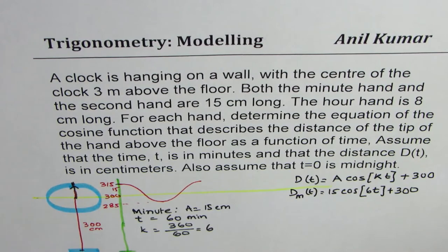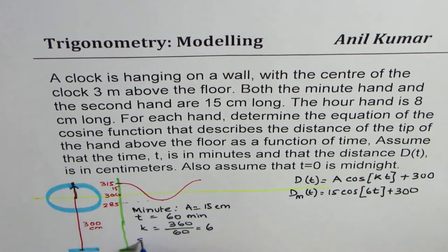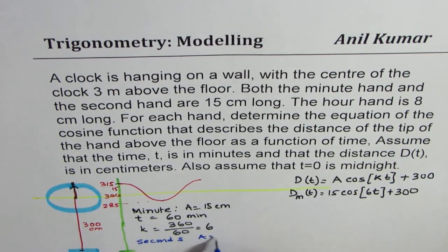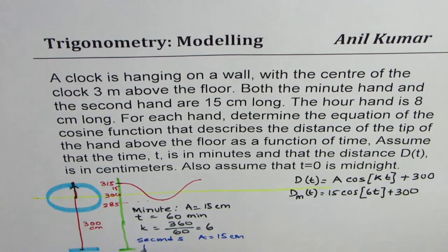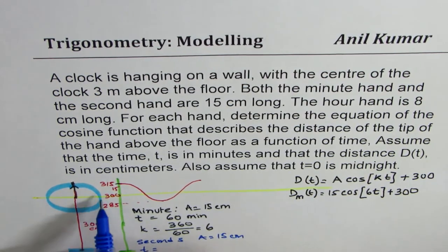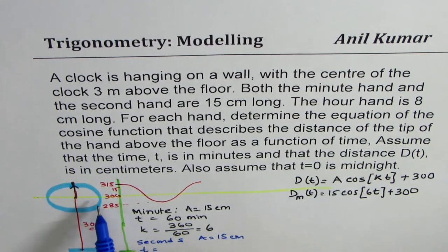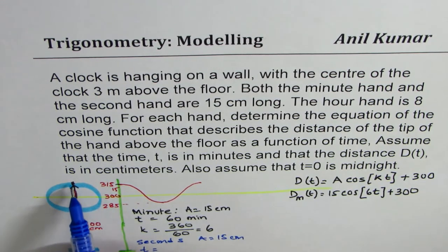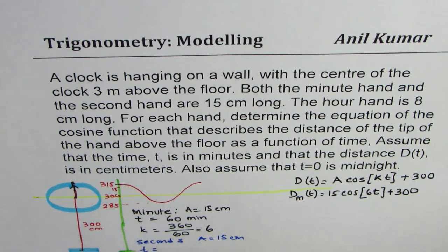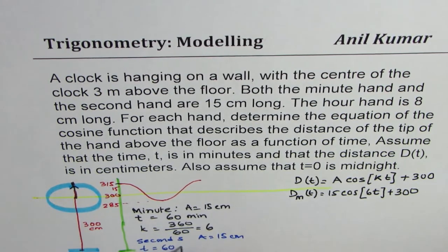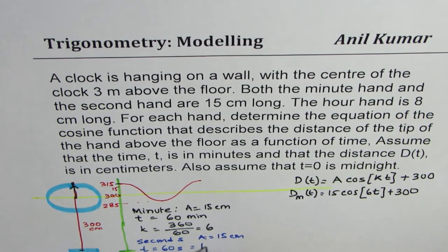Now let's do the same calculation for the seconds. For the seconds, amplitude still is 15 centimeters. However, the time taken will be very small. A second hand will do one full circle in how many minutes? In just one minute. It does one full circle in 60 seconds, which is one minute.